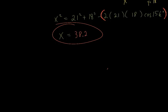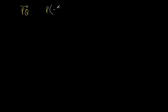Let's go on to numbers 19 and 20: vectors, magnitude and direction. The problem says to find the magnitude and direction of vector PQ. Point P is at negative 2, 4, and point Q is at negative 5, negative 6.